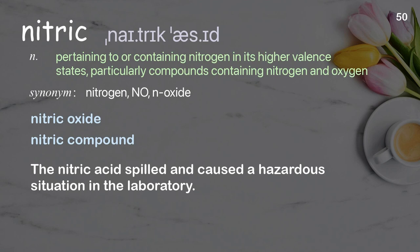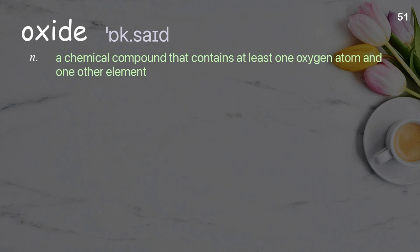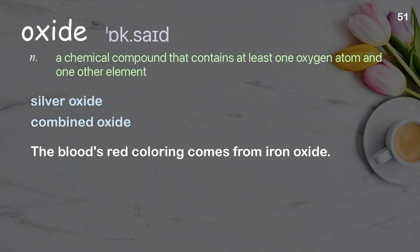Oxide: a chemical compound that contains at least one oxygen atom and one other element. Examples: silver oxide, combined oxide. The blood's red coloring comes from iron oxide.